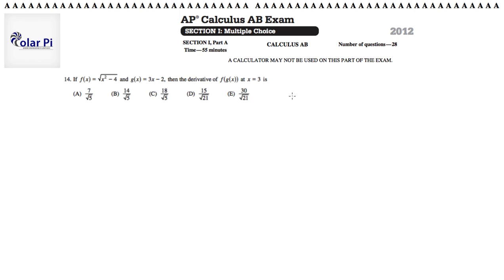This is just a question about chain rule. First of all, if you so choose, you can find the composition function first. That is to say, you can find out that f of g of x would have to be plugging g of x into f.